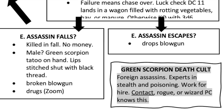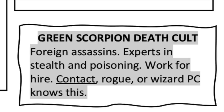Details on the assassin are in the gray sidebar. He is a member of the Green Scorpion death cult — foreign murderers who work for hire. If you've seen my video on three NPCs, you'll remember the sage archetype, a contact who knows everything and advises the player characters. If the players have such a contact, they'll reveal information about the cult. Otherwise, you may allow a rogue or wizard to know this information — no history or arcana checks required. They just know the cult exists, but not how or where to hire one.